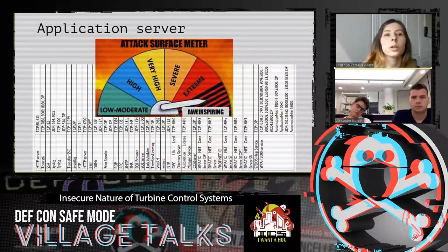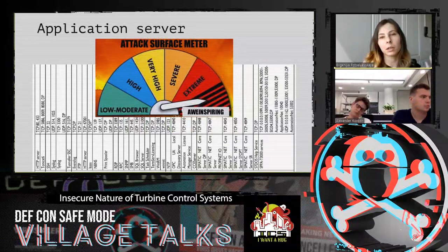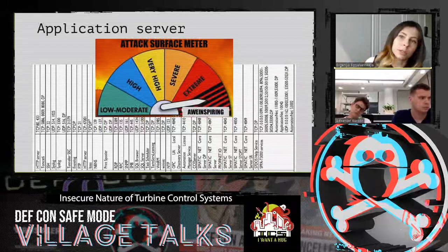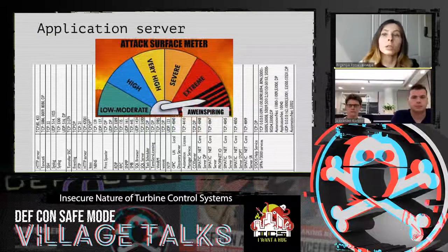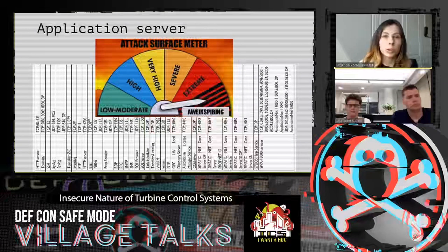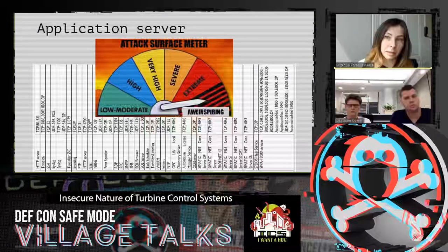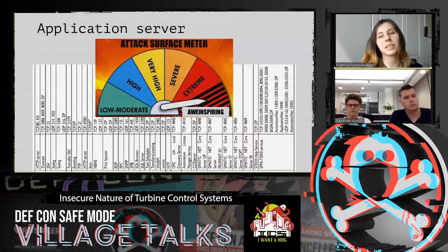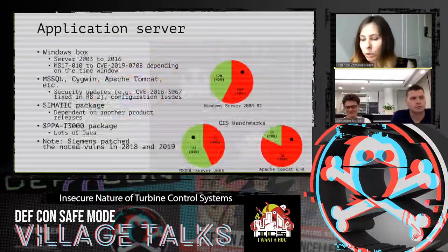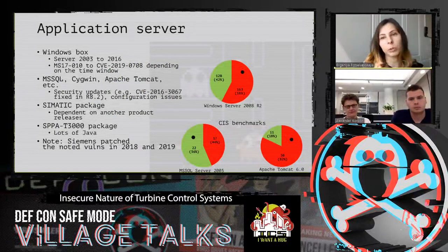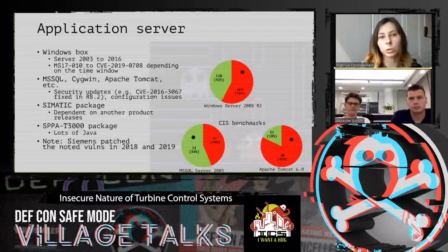Let's start with the application server. The application server is the logical core of the entire system — everything has connections to it in a logical sense. If anything needs to connect to the network, it ends up at the application server. Other servers start their work by loading software from the application server and launching it. So this is the heart of the system. And what can possibly go wrong if you open over 40 ports there? For an attacker, this is a huge attack surface. If they are lucky enough to get into the respective network, they can choose what they want to attack: the Windows operating system, third-party components, or SPPA-T3000's own services which are based on Java.